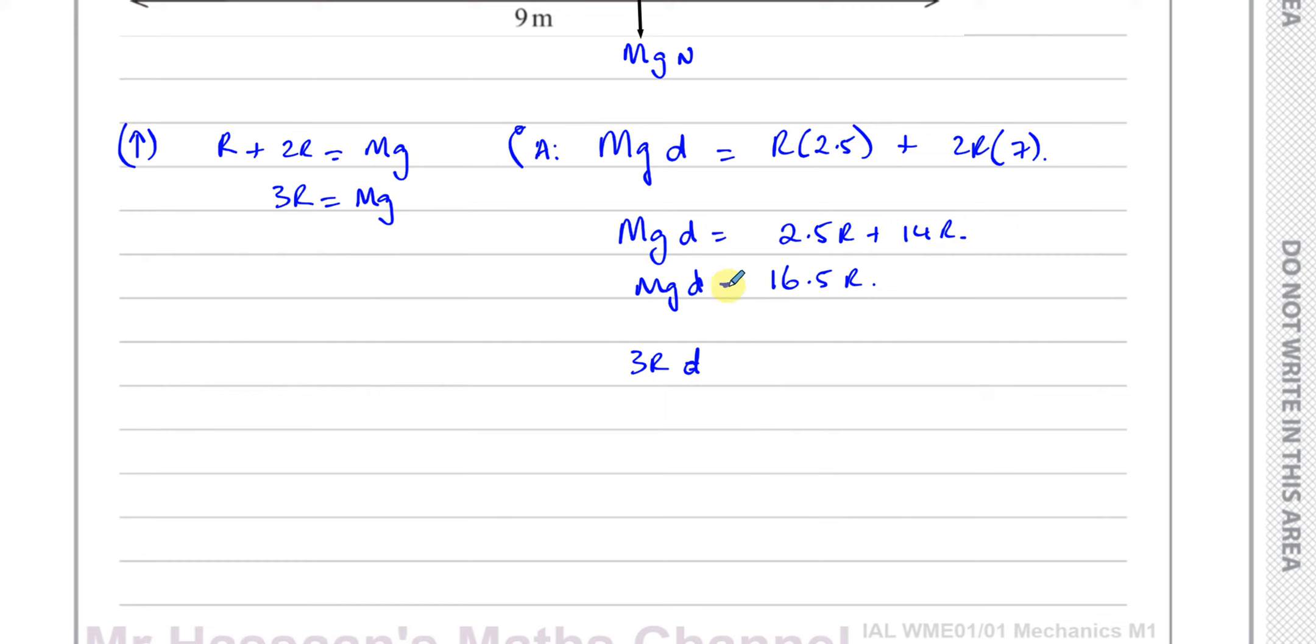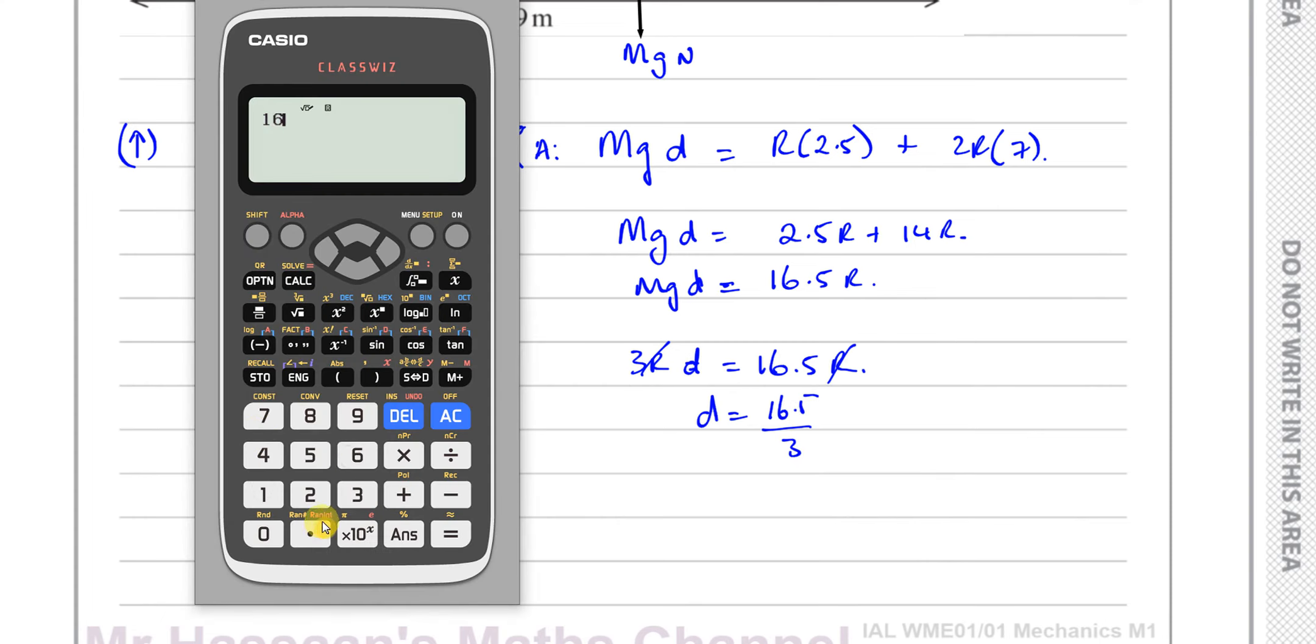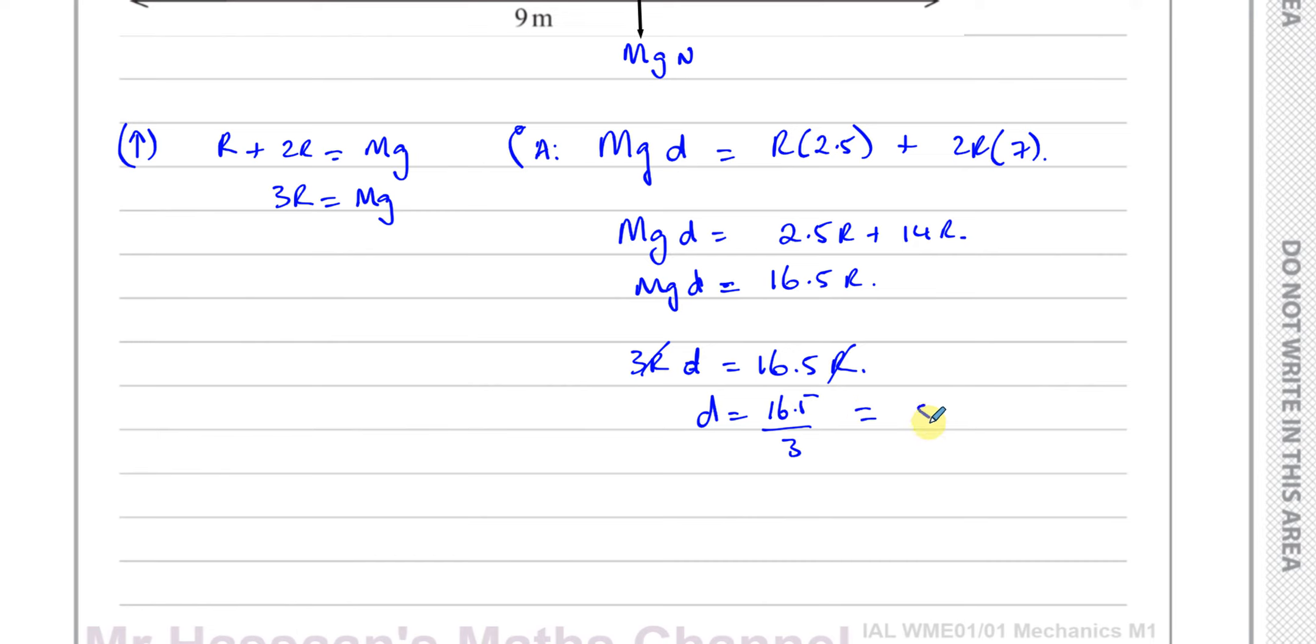And that's equal to 16.5 times R. Now the R's will cancel. And you've got D equals 16.5 divided by 3, which gives you 11 over 2 which is 5.5. So D is equal to 5.5 meters, and there's the answer to this question.